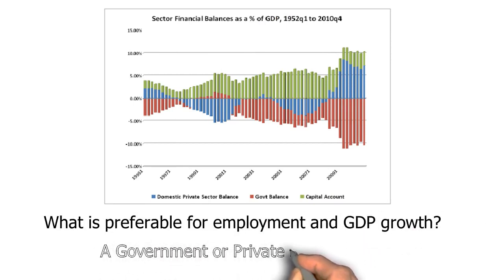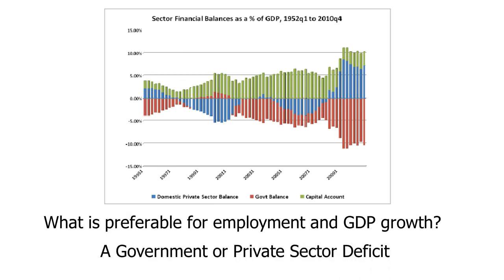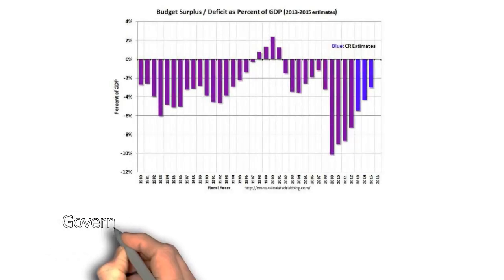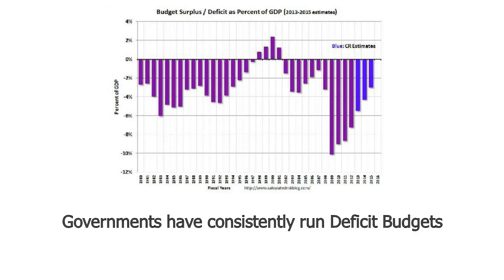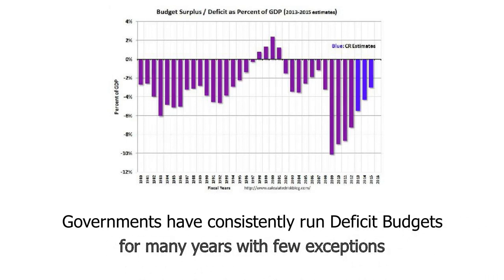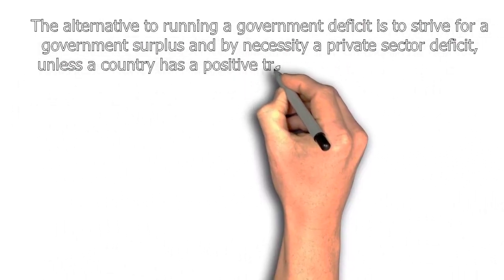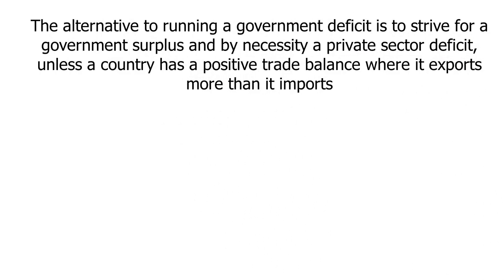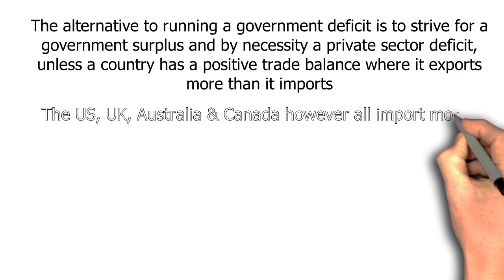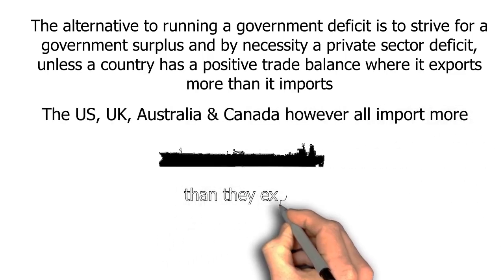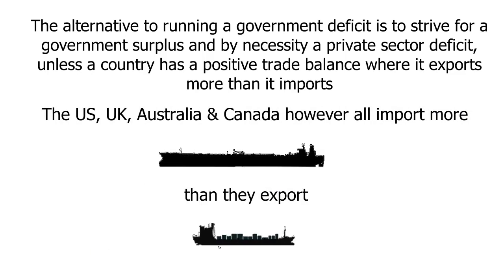Given that it is virtually impossible to have a balanced budget, what then is preferable, a government deficit or a public sector deficit? Proponents of modern monetary theory would argue the government should run a deficit and create enough money until there is a state of full employment to generate spending and subsequent growth in the GDP. Indeed, it is normal for governments to run deficit budgets, and have done consistently for many years with few exceptions. The alternative is to strive for a government surplus, and by necessity a private sector deficit, unless a country has a positive trade balance where it exports more than it imports. The US, UK, Australia and Canada, however, all import more than they export.